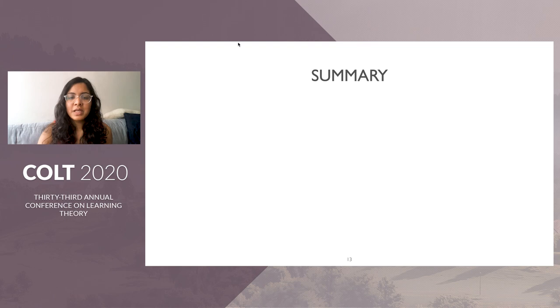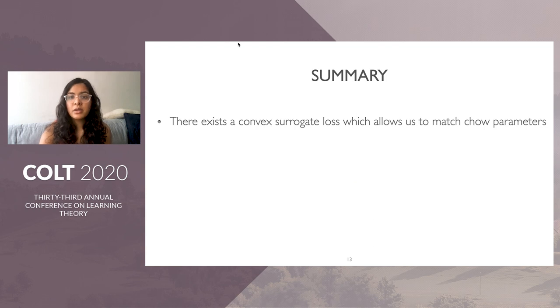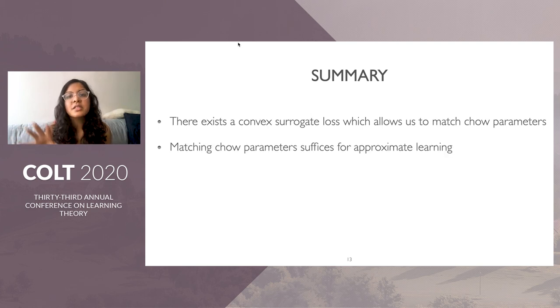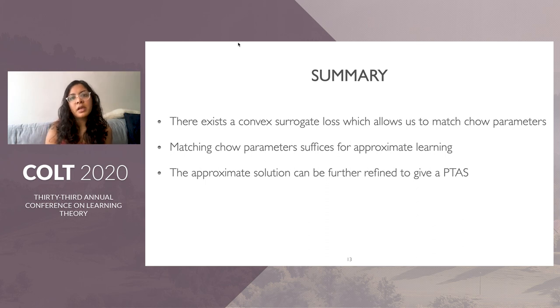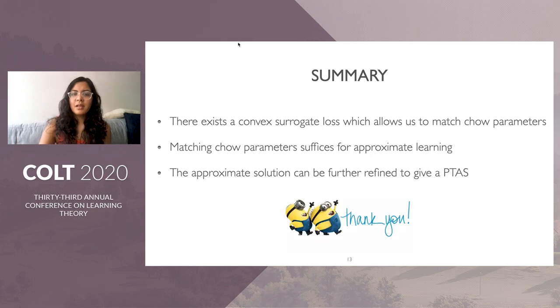Let me conclude by summarizing our results. First, we showed there exists a convex surrogate loss which allows us to match Chow parameters. Second, we showed matching these Chow parameters is sufficient for our approximate learning guarantee, a strong characterization of how Chow parameters are related to learning. Last, we showed this approximate solution can be further refined using more sophisticated machinery to get a polynomial time approximation scheme giving any one plus alpha approximation. Thank you.